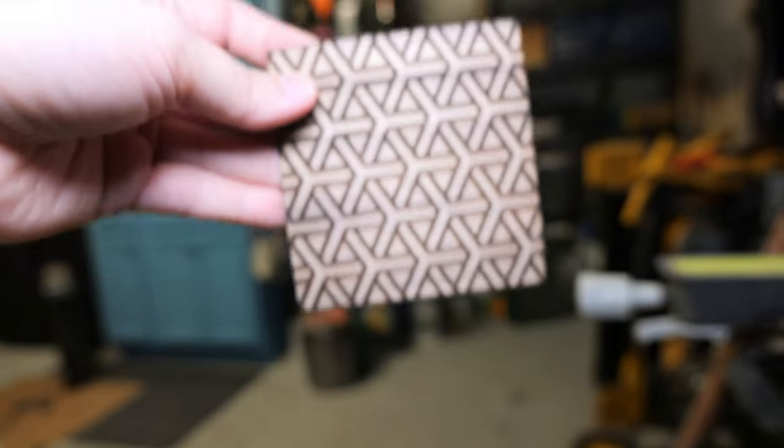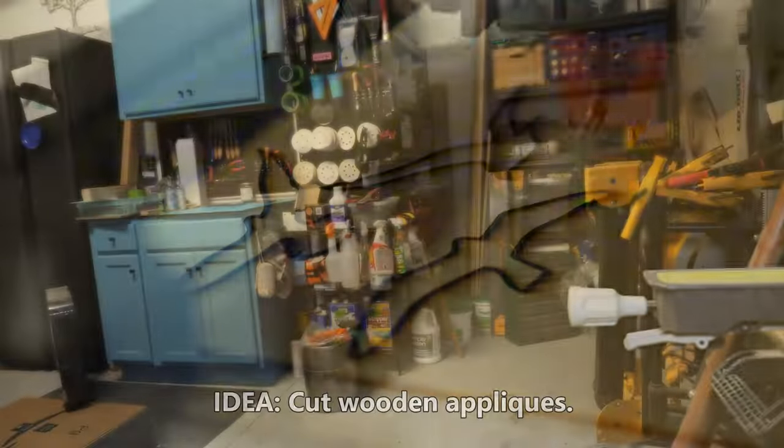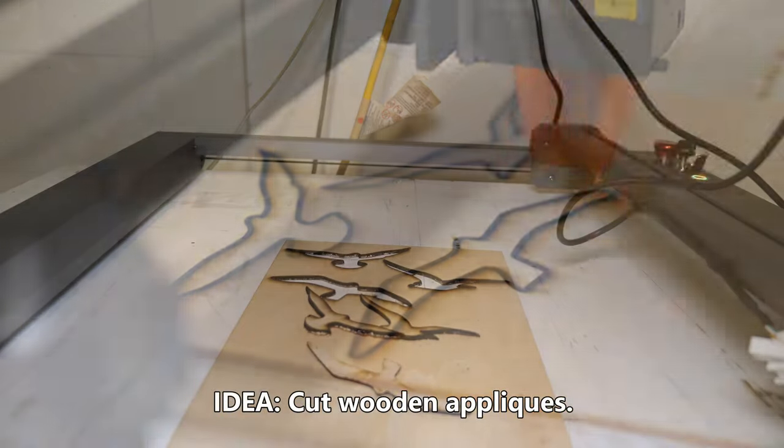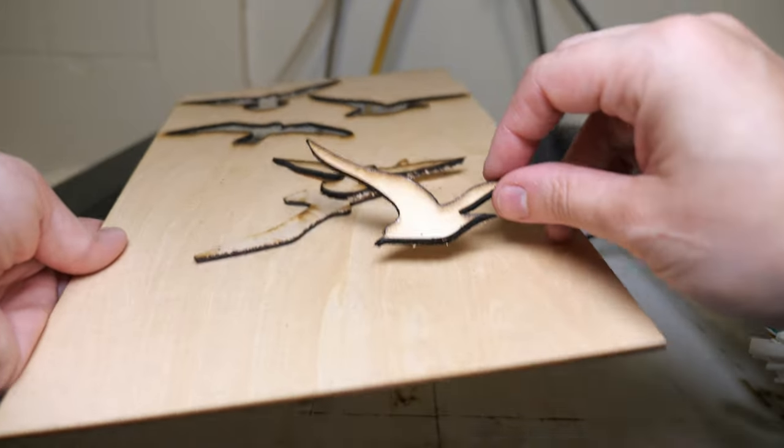One of the final very simple ideas I want to share with you is that you can cut out wooden appliques using a laser. It takes several passes, but now you can have repeatable shapes that you can fasten into a piece of furniture or whatever you're working on.